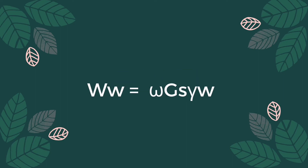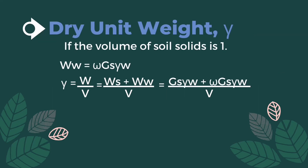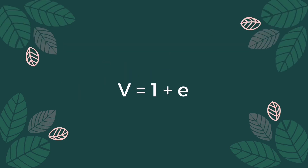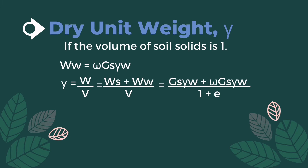Weight of water is equal to moisture content times specific gravity times unit weight of water. Substituting everything into the formula, we get: specific gravity times unit weight of water plus moisture content times unit weight of water, divided by total volume. Total volume is equal to 1 plus void ratio, giving us this equation.